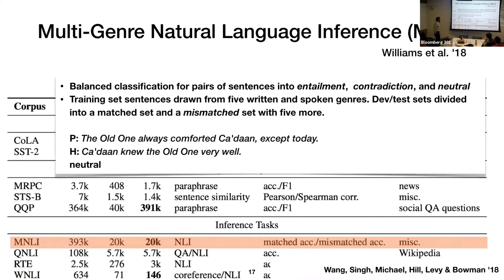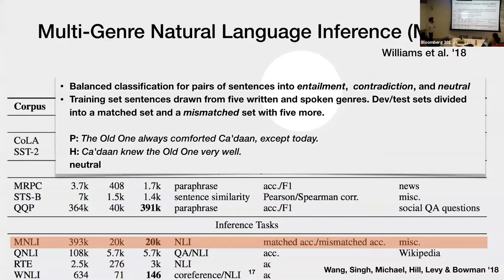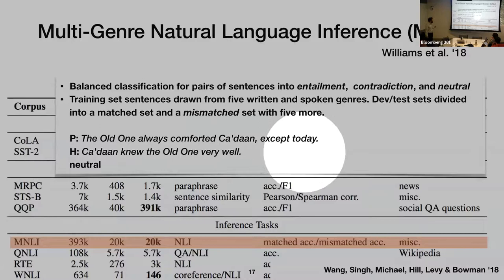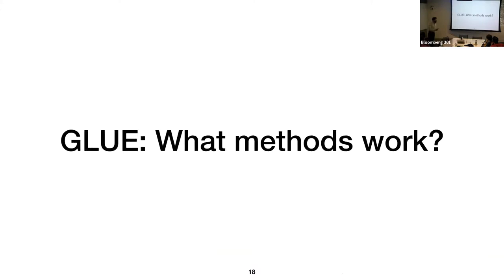The other dataset I want to highlight is the Multi-Genre Natural Language Inference (MNLI) corpus — a balanced three-way classification task for pairs of sentences with labels: entailment, contradiction, and neutral. For example, from the science fiction section: premise 'The old one always comforted Kadan except today'; hypothesis 'Kadan knew the old one very well' — this is neutral, since you can't conclude the second must be true (entailment) or must be false (contradiction). The training set is drawn from five different sources of text, and the test set from ten sources, with a section requiring adaptation to fairly different domains than seen during training.